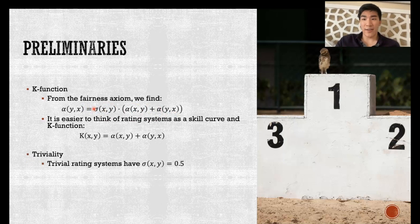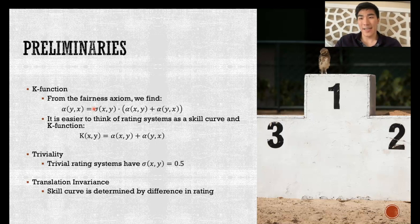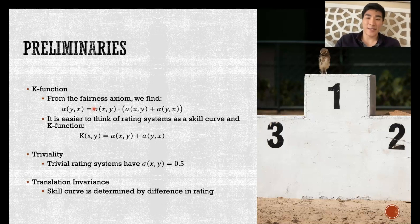We also have the idea of triviality. Trivial rating systems are basically flat — all ratings mean the same thing practically speaking. These rating systems are not very useful and create weird edge cases, so many of our results will omit them. We also have the idea of translation invariance, which means the skill curve is completely determined by differences in rating. So the probability of a player rated 100 beating a player rated 90 would be the same as a player rated 10 beating a player rated 0. ELO is translation invariant, and this is a plus because translation invariant skill curves are easier to interpret — rating changes and rating differences mean the same thing across the board.